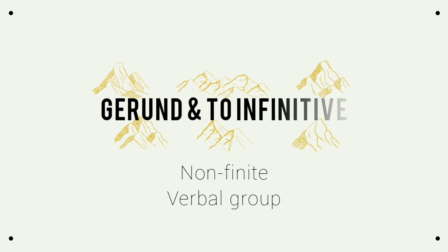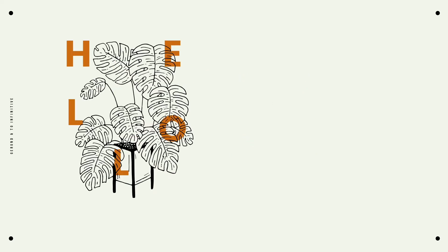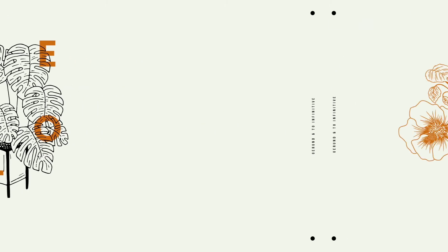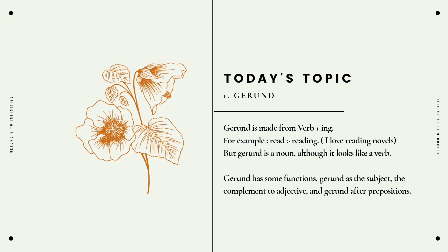The first one is gerund. What is a gerund? A gerund is made from verb plus -ing. For example, 'read' becomes 'reading.' Even though gerund is made from a verb, actually gerund functions as a noun, because sometimes you just want to talk about the action without doing it. For example, 'I love reading' — I'm talking about reading as an action but I'm not doing it right now.